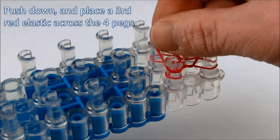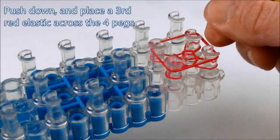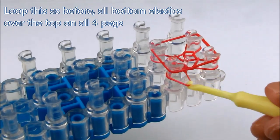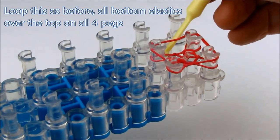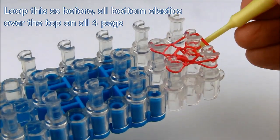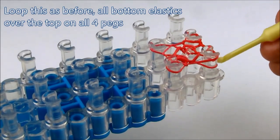Now we will start working on the bauble. Place another red elastic on all four pegs.